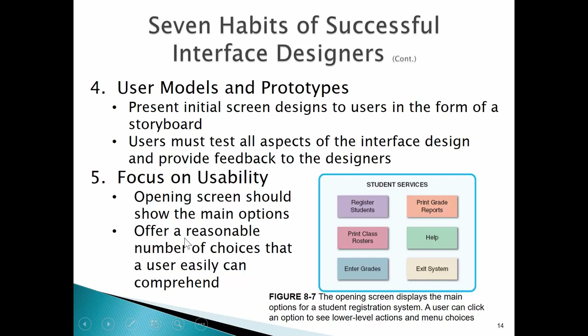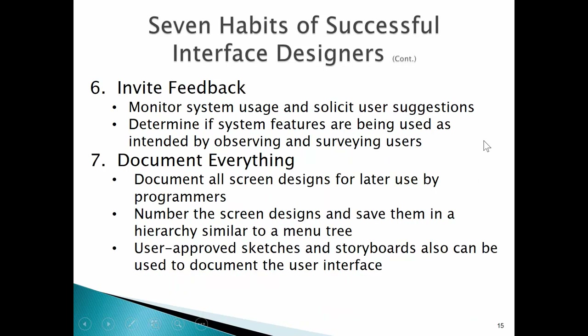Opening screens should be the main menu of options for that role — for example, student services would look different from instructor services. We can present a customized interface for each role in the organization. We bring this back to the user iteratively: this would work for me, this works better, we could do this. Let's go ahead and do that so the system is scalable and grows as the business grows. If one job becomes two jobs, we create roles that correctly implement the right functionality for each, giving each user just what they need.